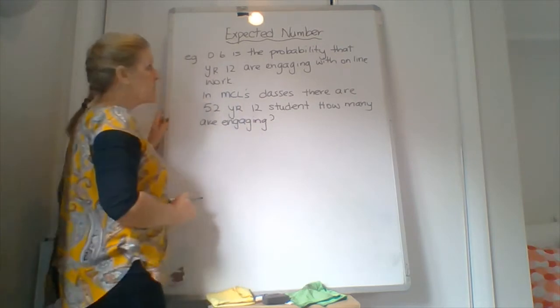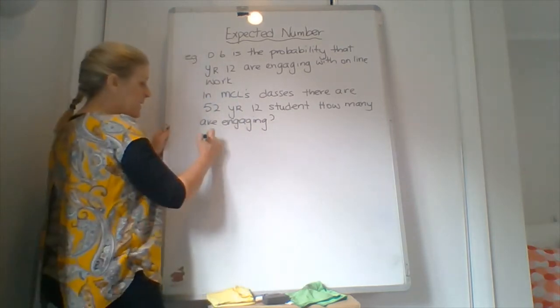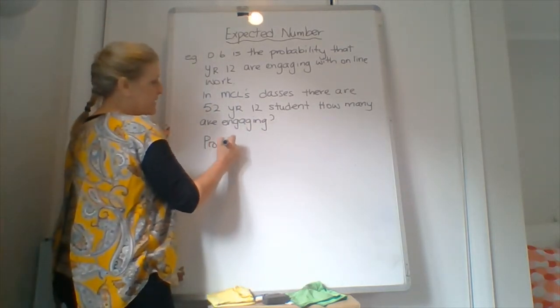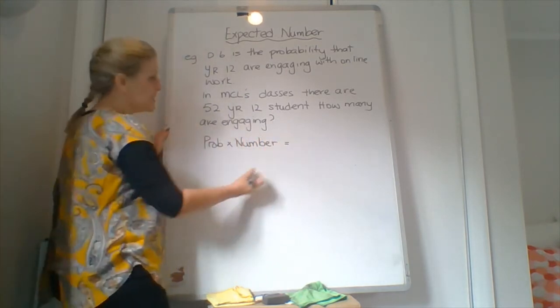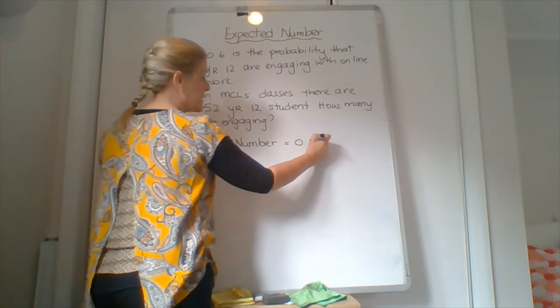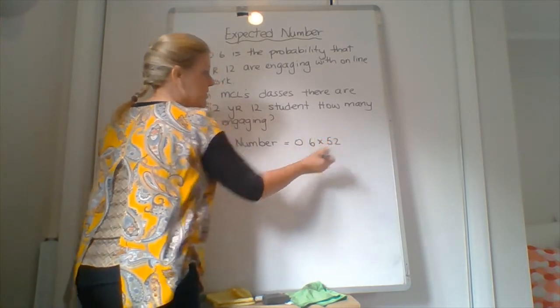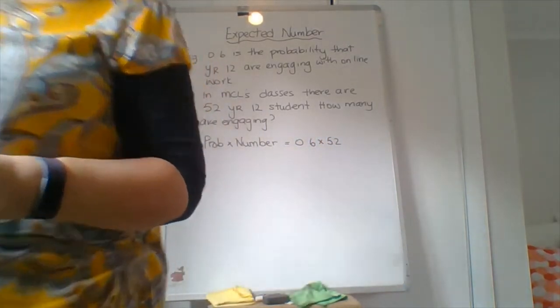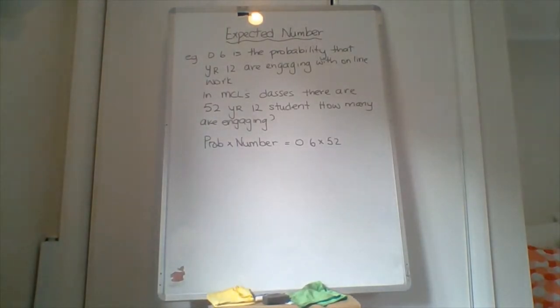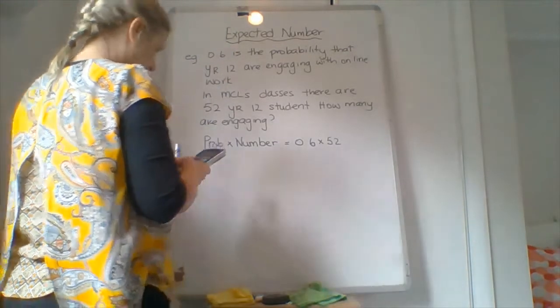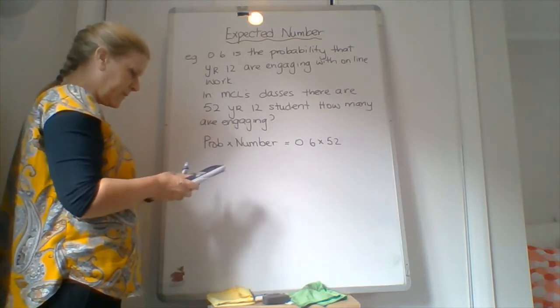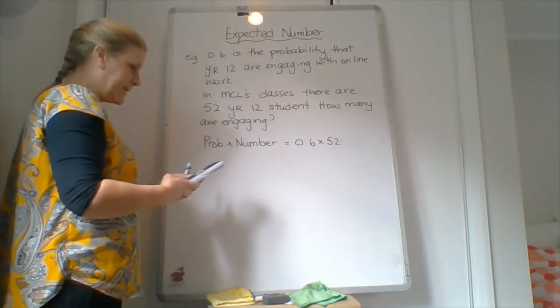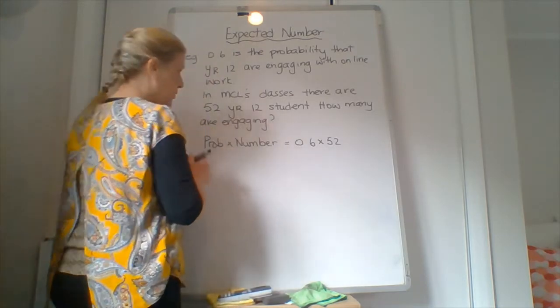So all we have to do is take our probability. So it's probability times number. So it equals 0.6 times 52. So I'll have to get my calculator to work out, just because my brain's a bit numb like the rest of you. 52 times 0.6 is 31.2.